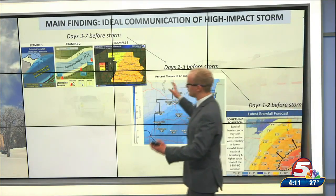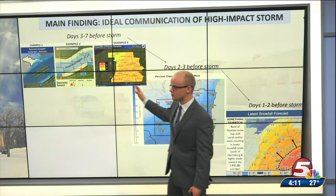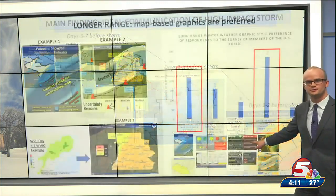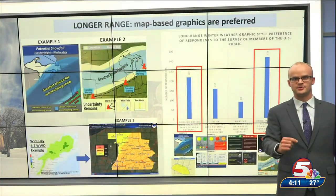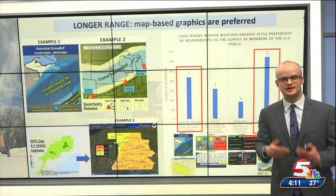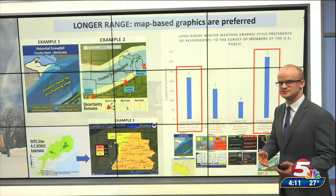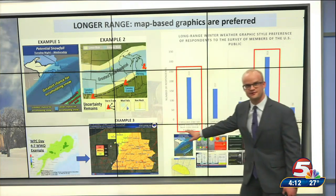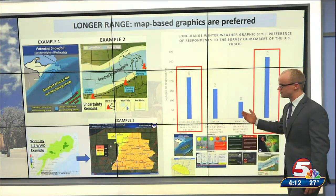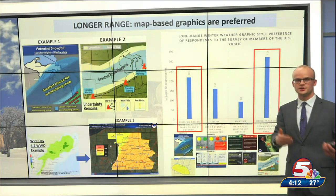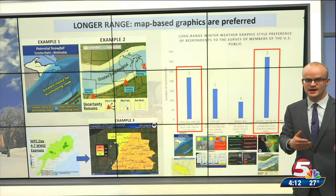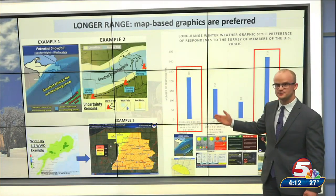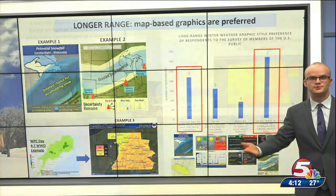When we're at that longer lead time — three to seven days before a winter storm — we can use certain graphics. And as we get closer, there are better graphics more suited to communicating probabilistic information. In the longer range, map-based graphics are most effective with communicating what the potential is like for snowfall. We here at KFOR use these map-based graphics to communicate the possibility of a winter storm up to a week in advance.